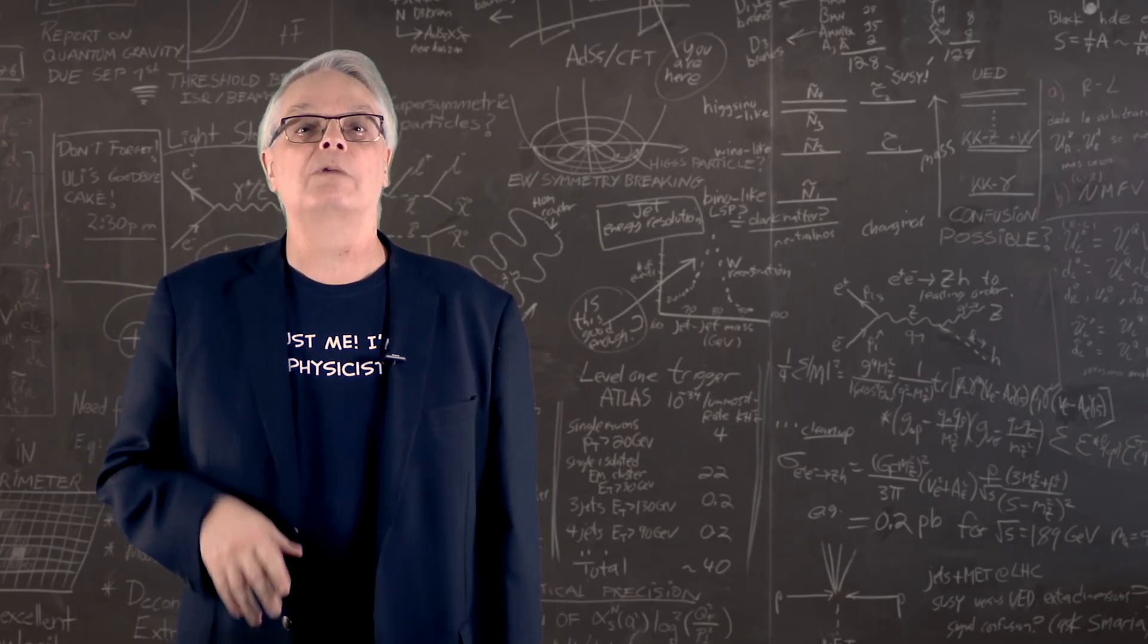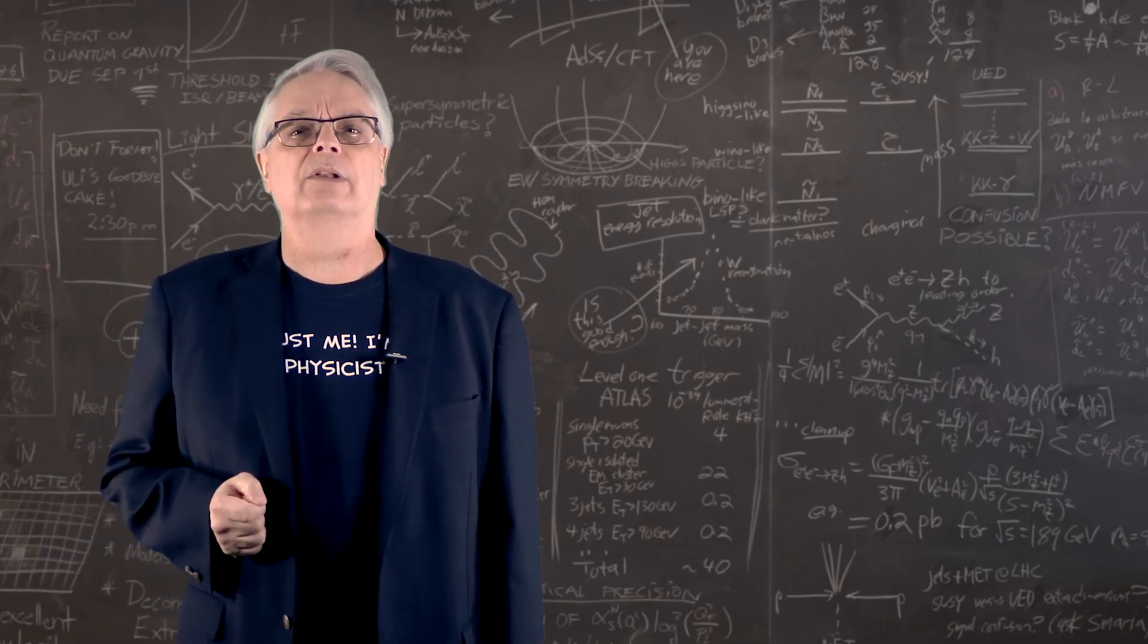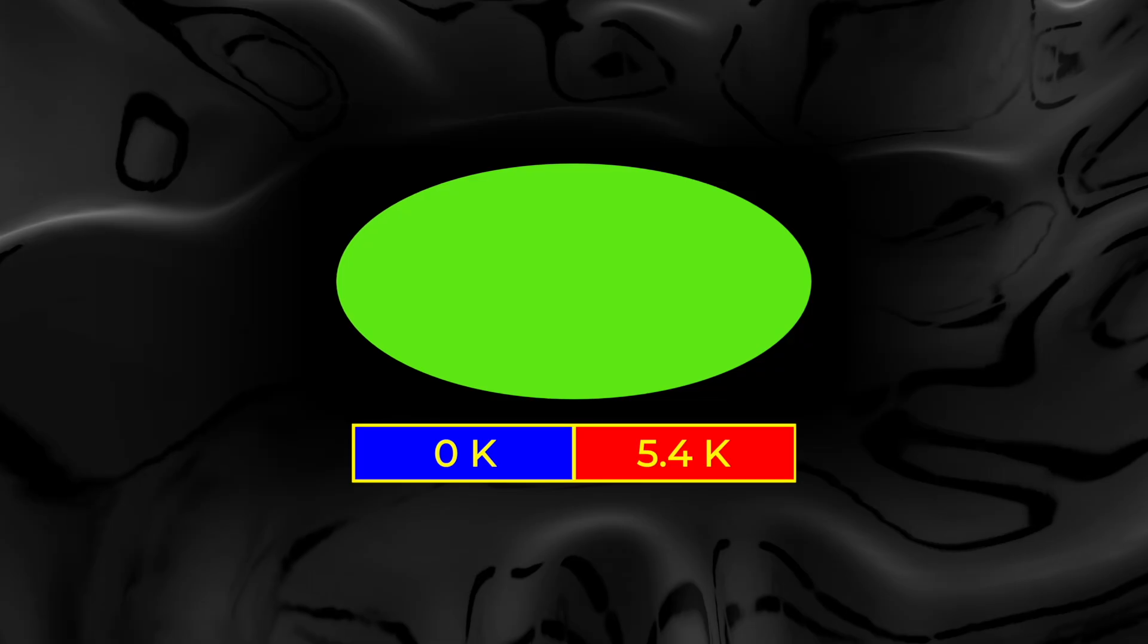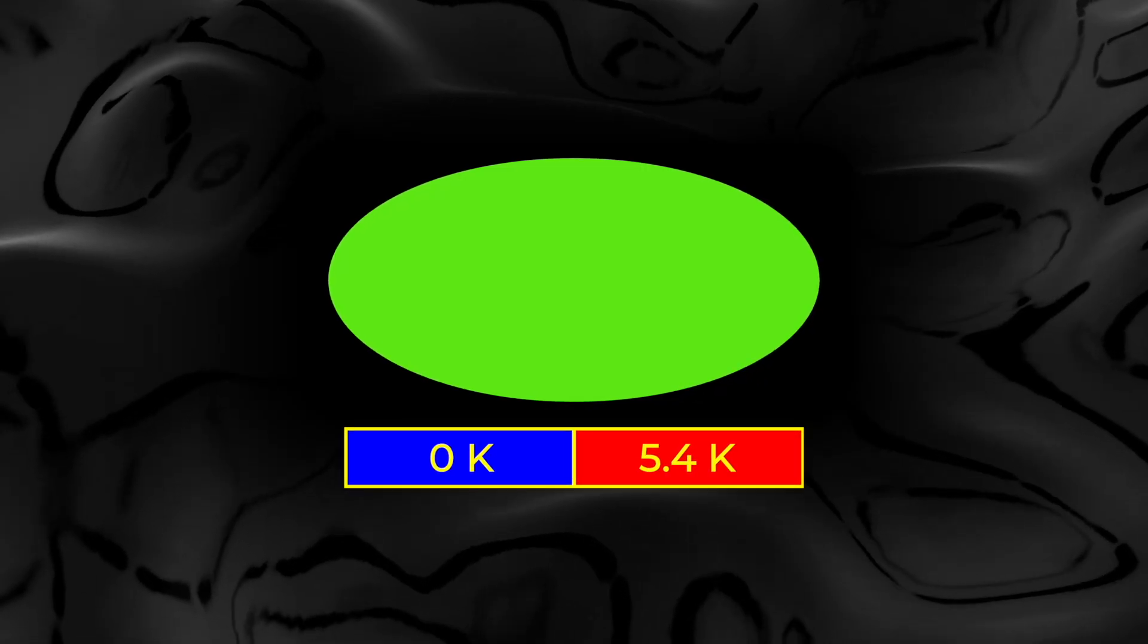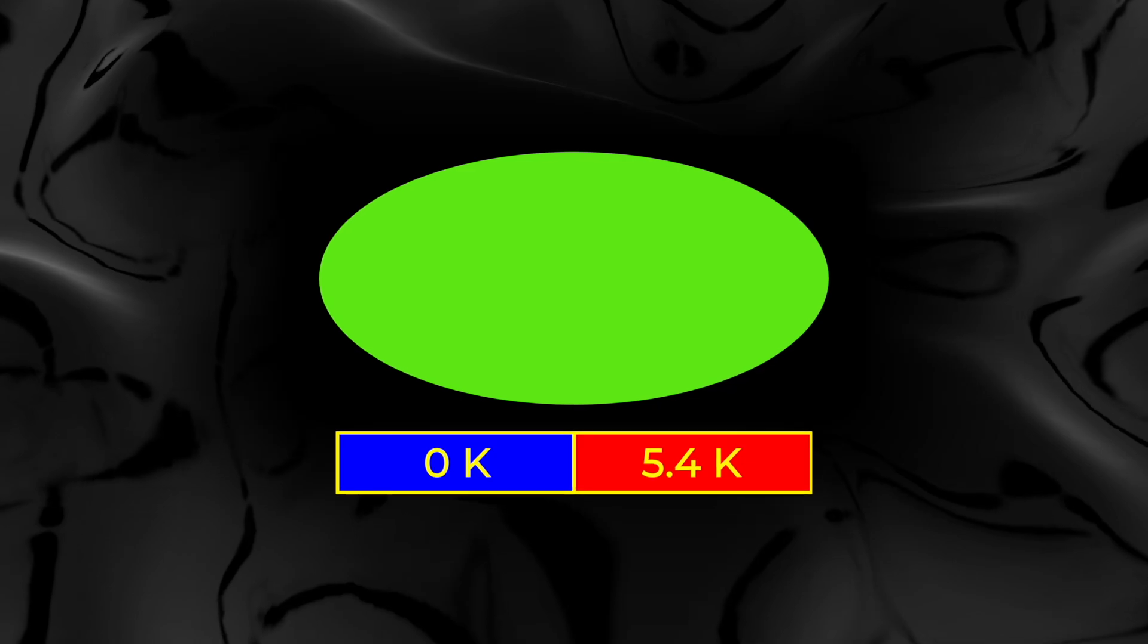However, to represent that sphere here on the screen, we need to make it two-dimensional. That's done in the same way this map of the Earth is done. So what you see here is a representation of the CMB as seen from Earth. Red is 5.4 Kelvin and blue is 0 Kelvin.